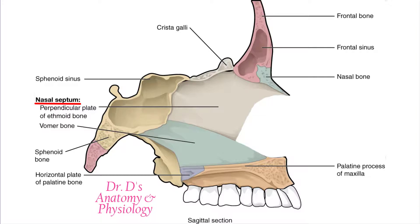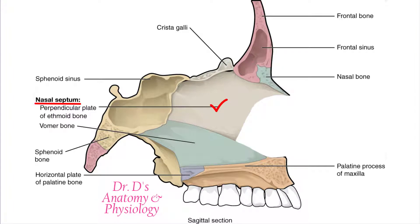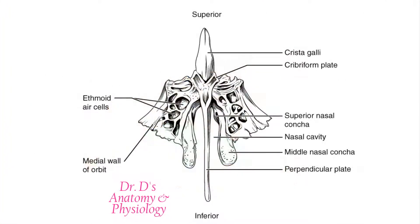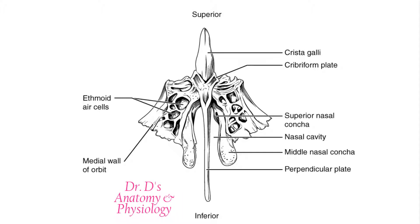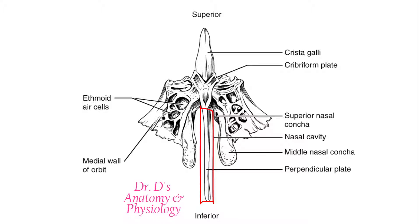The first bone is the ethmoid bone, which we talked about in a previous video. Looking at the ethmoid bone in this figure, we can note that a part of the ethmoid bone is the perpendicular plate, and it is the perpendicular plate that's going to contribute to the nasal septum.